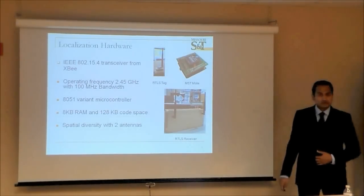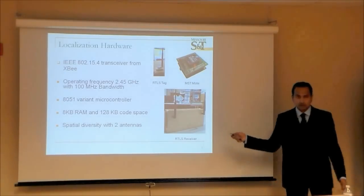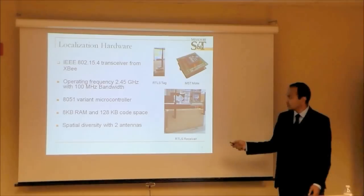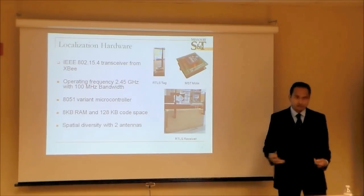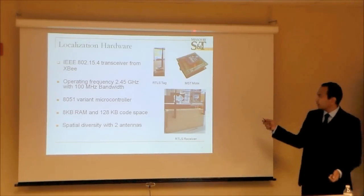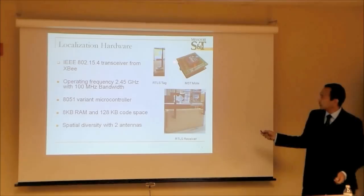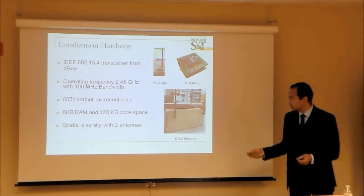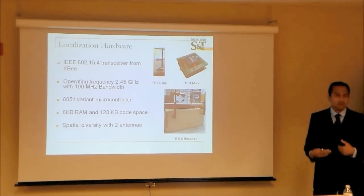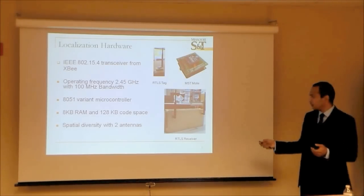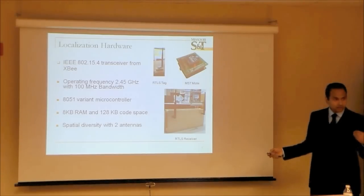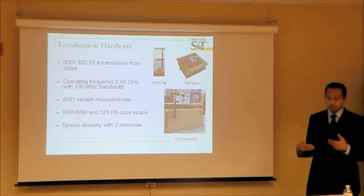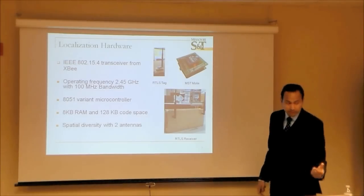For all these experiments, I used commercially available IEEE 802.15.4 transceivers operating in the 2.45 GHz ISM band. We also had a microcontroller for coordinating transmission and reception. I also experimented with antenna diversity — I used two antennas with two receivers and combined their power to get better localization accuracy, which I'll explain later.